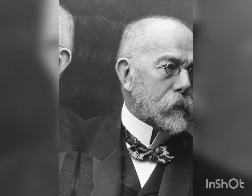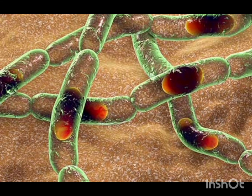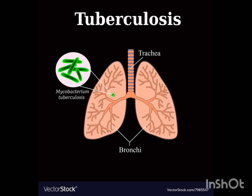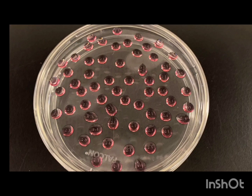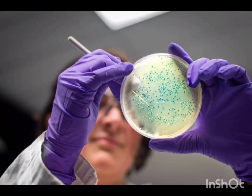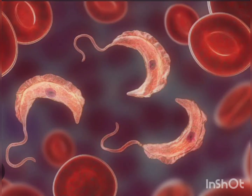Robert Koch was a German physician and one of the founders of bacteriology. He discovered anthrax bacilli, tubercle bacilli, and cholera bacilli. He described the hanging drop method to detect the motility of bacteria. He introduced the method of obtaining pure culture using solid media.